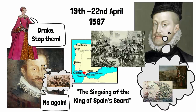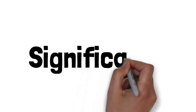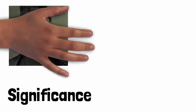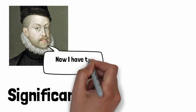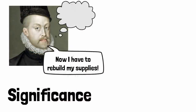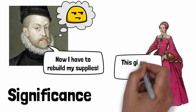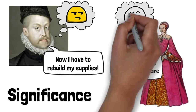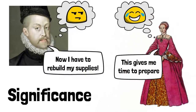After this, Drake went off to do what he does best, attacking and stealing from Spanish ports and ships. This event is important because it had two main consequences: Spain had to look to its own defences and to rebuilding its supplies, which delayed the Armada by a year and brought England crucial time to prepare for the Spanish Armada of 1588.